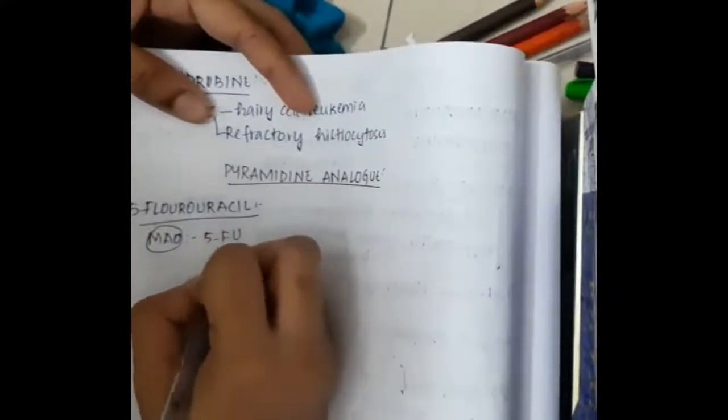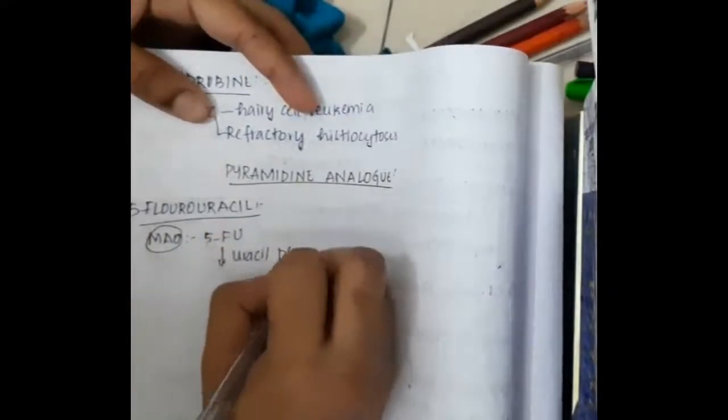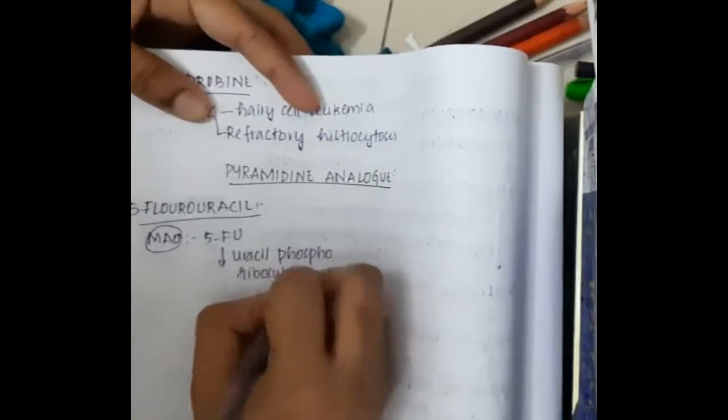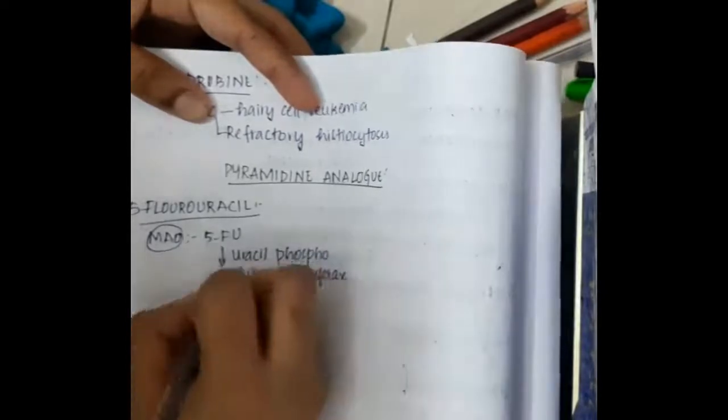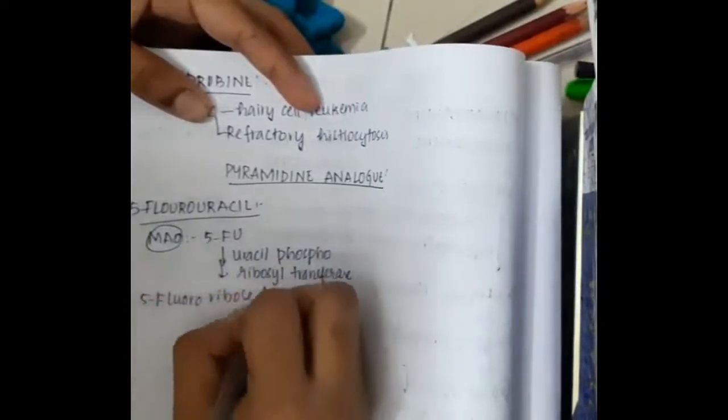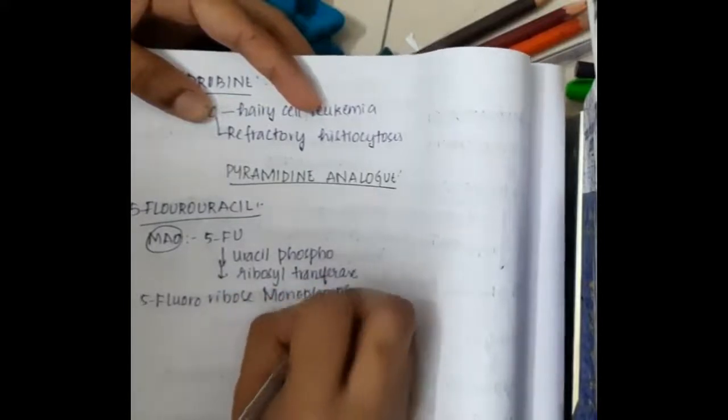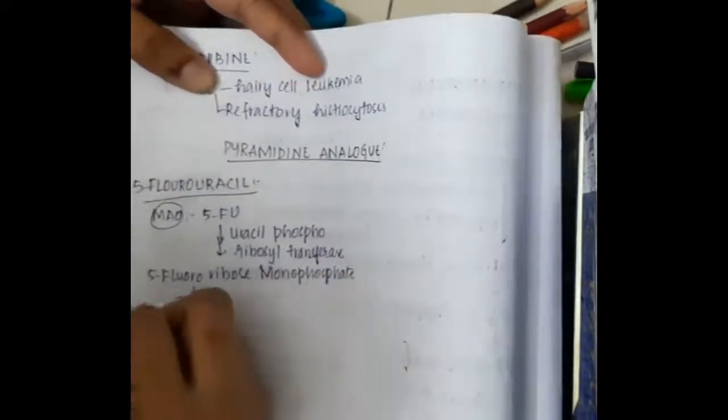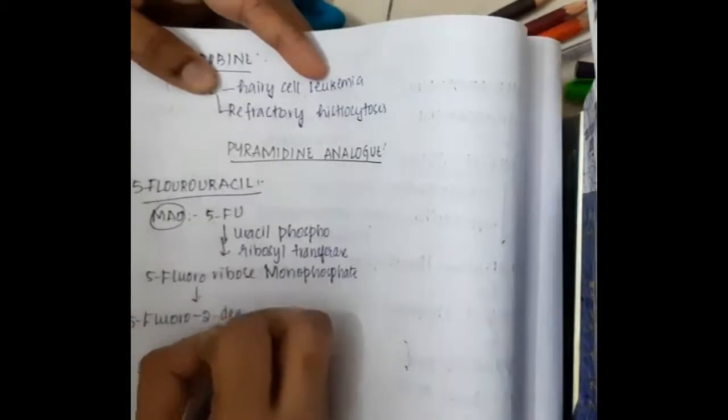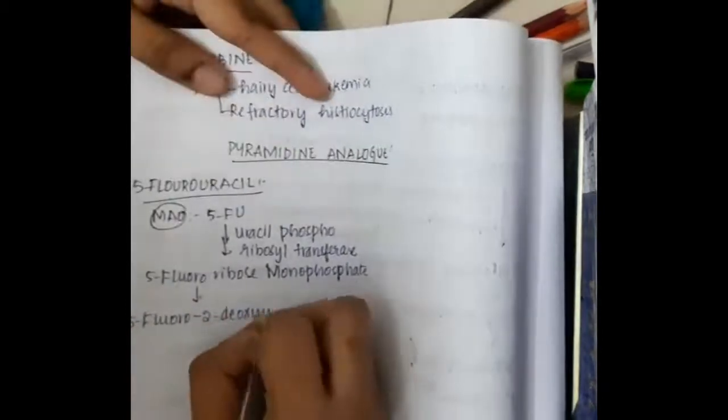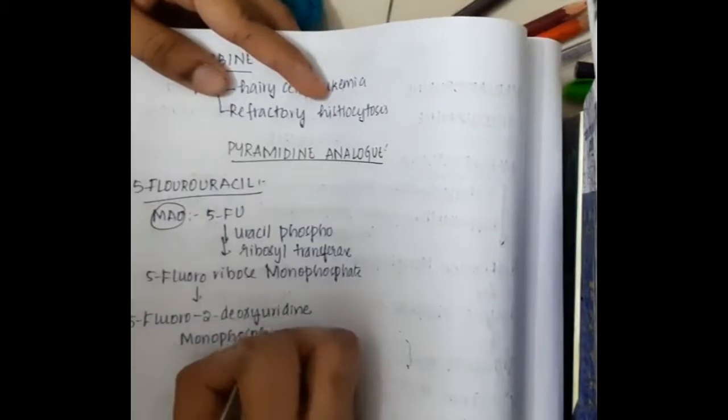Mechanism of action: 5-fluorouracil in the presence of uracil phosphoribosyl transferase forms 5-fluorouridine monophosphate. This gets converted to 5-fluoro-2-deoxyuridine monophosphate.